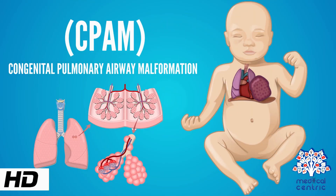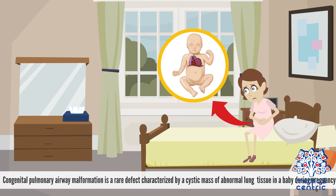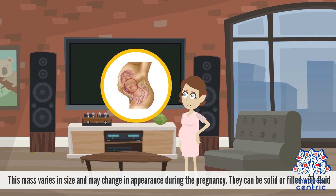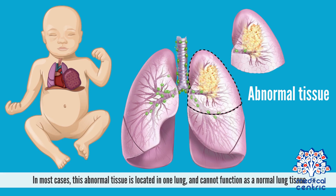Today's topic is Congenital Pulmonary Airway Malformation, or CPAM. Congenital pulmonary airway malformation is a rare defect characterized by a cystic mass of abnormal lung tissue in a baby during pregnancy. This mass varies in size and may change in appearance during the pregnancy. They can be solid or filled with fluid. In most cases, this abnormal tissue is located in one lung and cannot function as normal lung tissue.